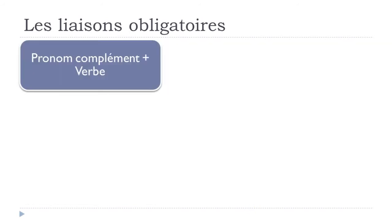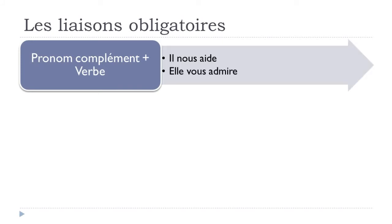If you have a pronom complément before the verb — subject, pronoun, verb — you should make the liaison between the two. For example: il nous aide, elle vous admire. You get the Z sound in both cases: il nous aide, elle vous admire.